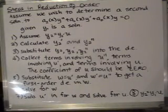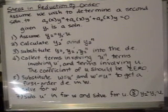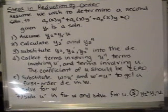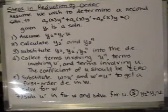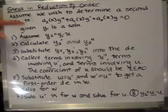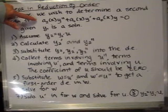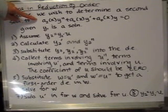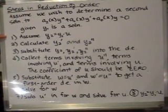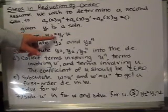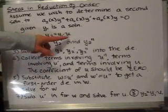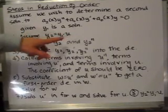Let me recap the steps to find the second solution to a second-order homogeneous differential equation if you know one solution. We let y1 be the known solution. The first step is to assume that the second solution y2 is equal to the known solution y1 times the unknown function u.